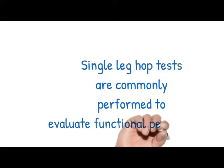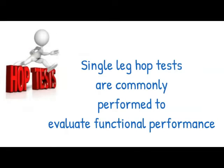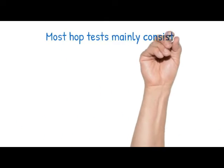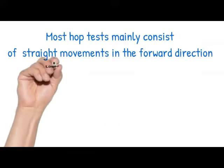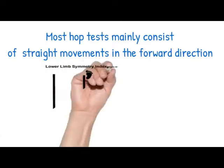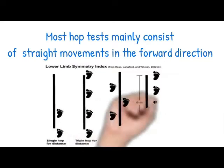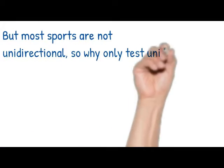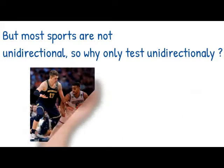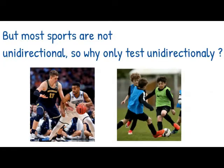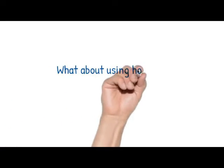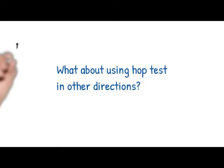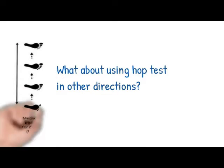The single leg hop tests are commonly performed to evaluate functional performance. However, most hop tests mainly consist of straight movements in the forward direction — the commonly used single hop for distance, triple hop for distance, crossover hop for distance, and the six meter hop for time. But most sports are not unidirectional, so why only test unidirectionally? Sports like basketball and football are multi-directional.